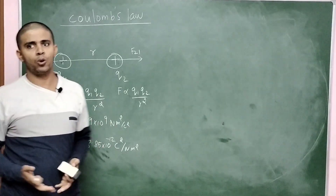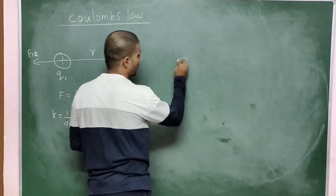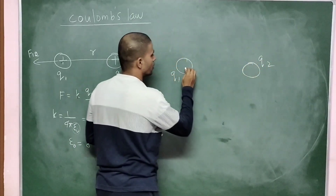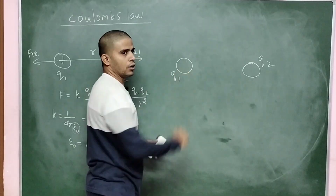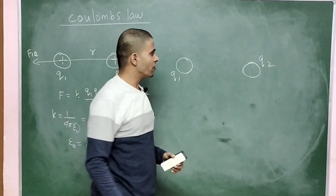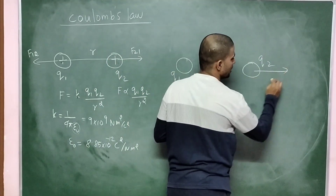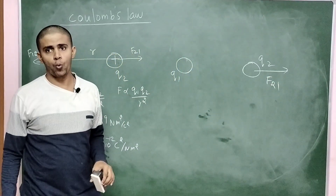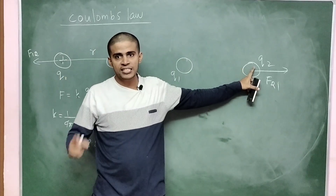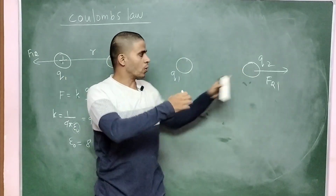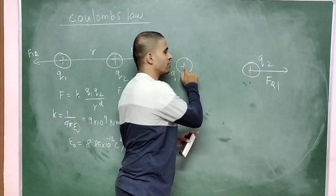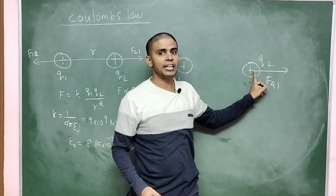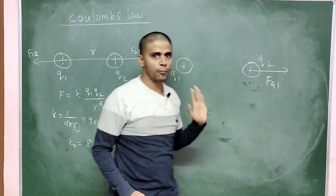We can also write Coulomb's law in vector form. For charges Q1 and Q2, the force on the second body exerted by the first is denoted F21. If the charges are the same sign they repel, so the force on the second body exerted by the first acts in the direction away from Q1.